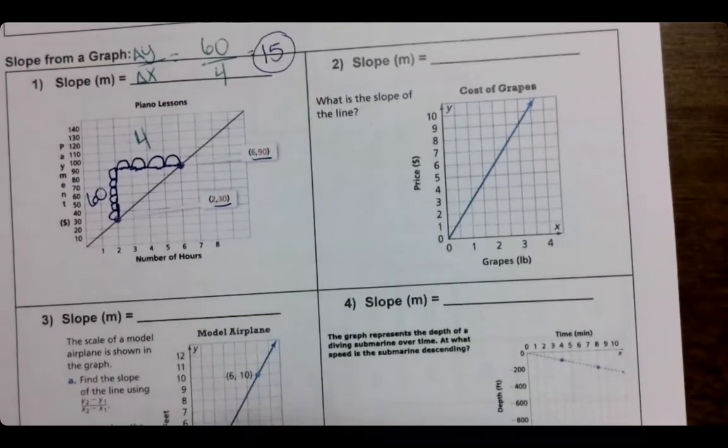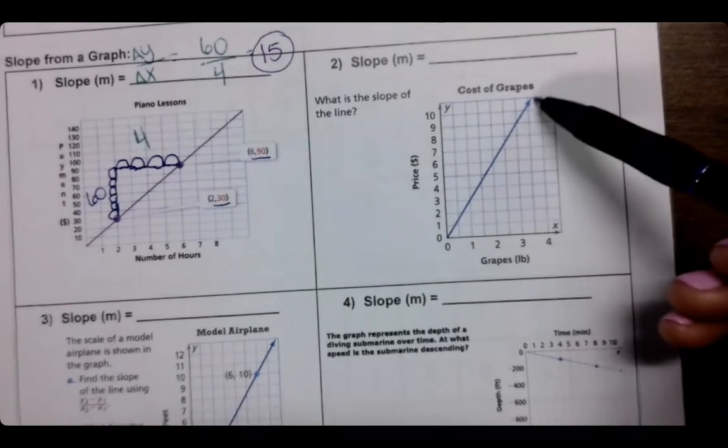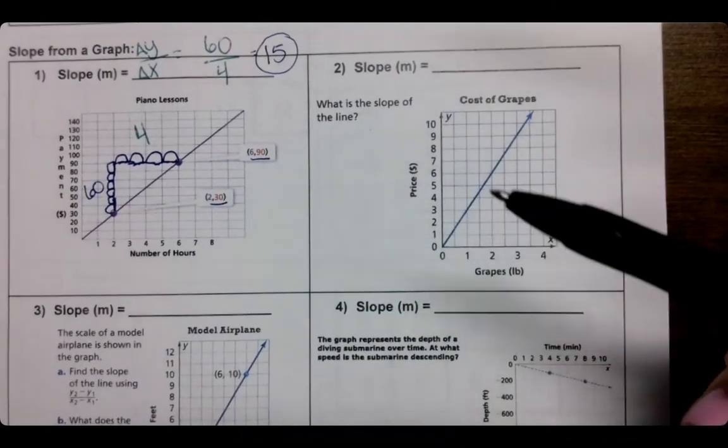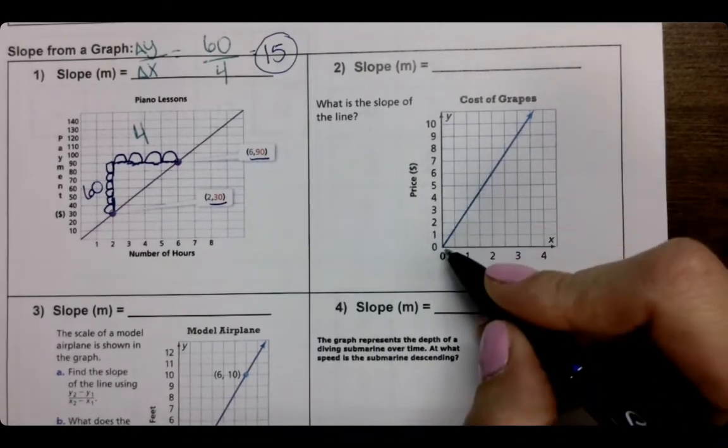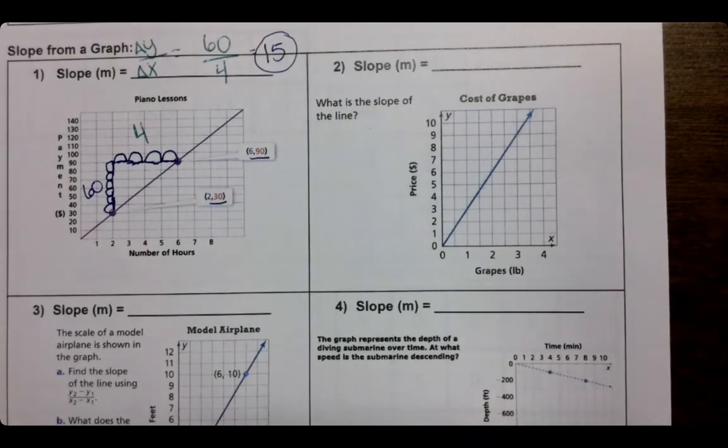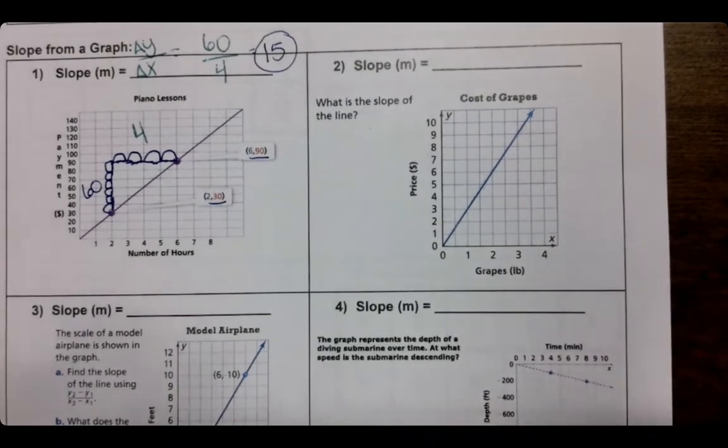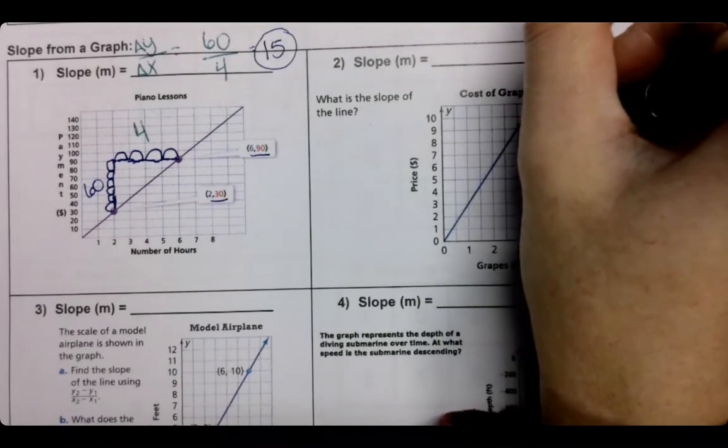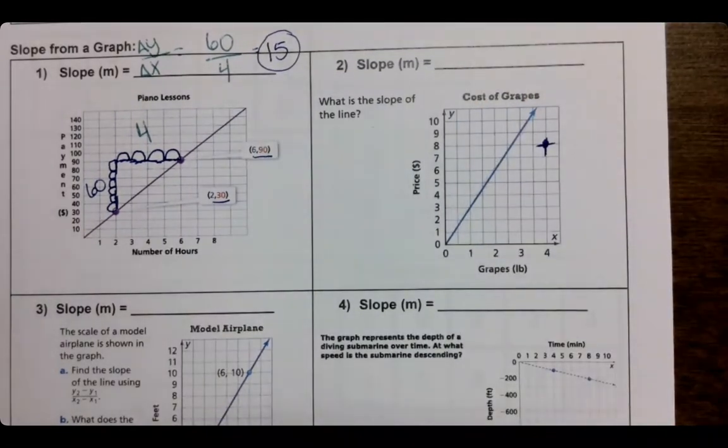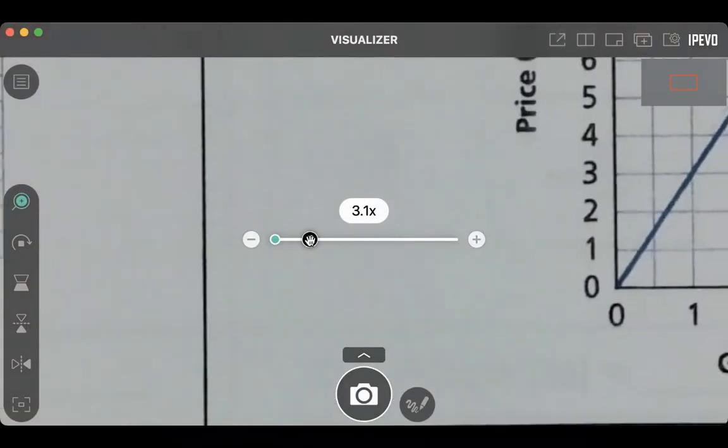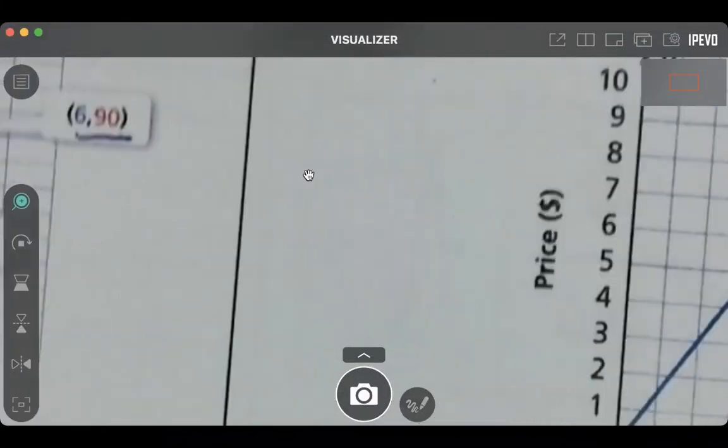So doing the same thing on number two, notice how number two doesn't have any dots on the graph. Like that makes it a little bit harder. So what I always tell students is you're going through the graph and you're looking where does that graph touch corners of boxes. So like see how these two lines meet and like that would be a corner of the boxes. That's what I mean. So I'm going to zoom in real fast on this one, just so that way you can see a little bit more of what I mean by that.